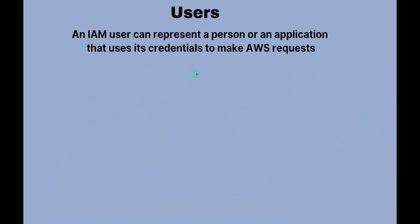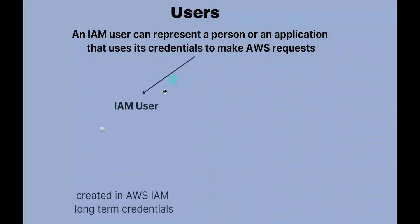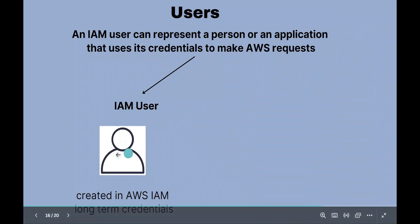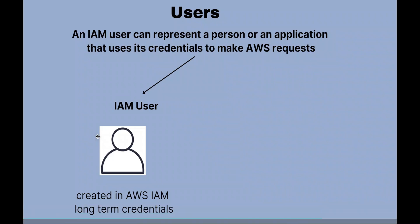First, let's talk about IAM user. A user actually represents a person or an application that uses its credentials to make a request. In our previous use case, the user was John, who is a developer and had access to Lambda and S3. You can create an IAM user for any user you want to give access to, and this user will have long-term credentials like an email ID or password.